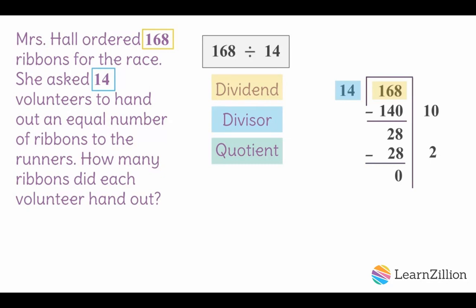Now it's time to add my partial quotients together to get the quotient. 10 plus 2 equals 12, so 12 ribbons were handed out by each volunteer.